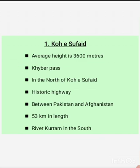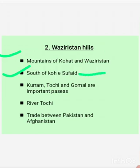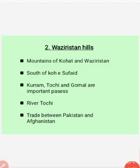The mountains of Waziristan Hills are located in the south of Koh-e-Sufaid. The Gomal and other important passes are located here. The valleys of these rivers are important passes for the development of trade between Pakistan and Afghanistan.